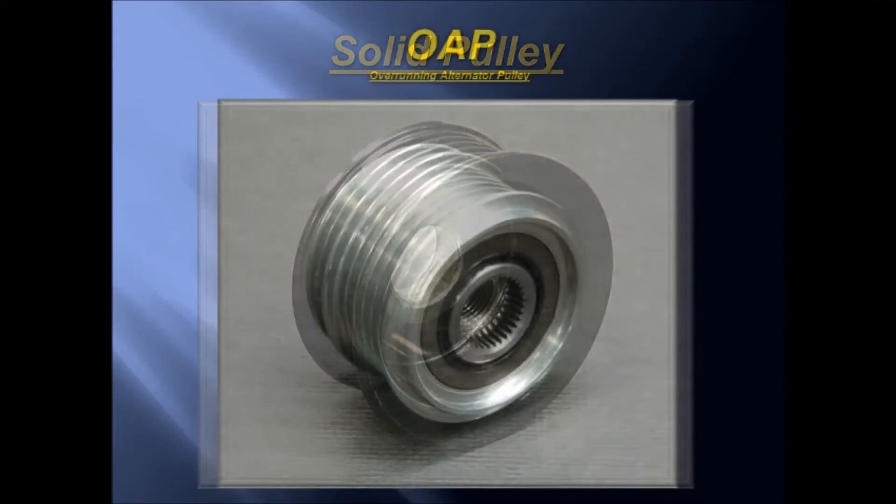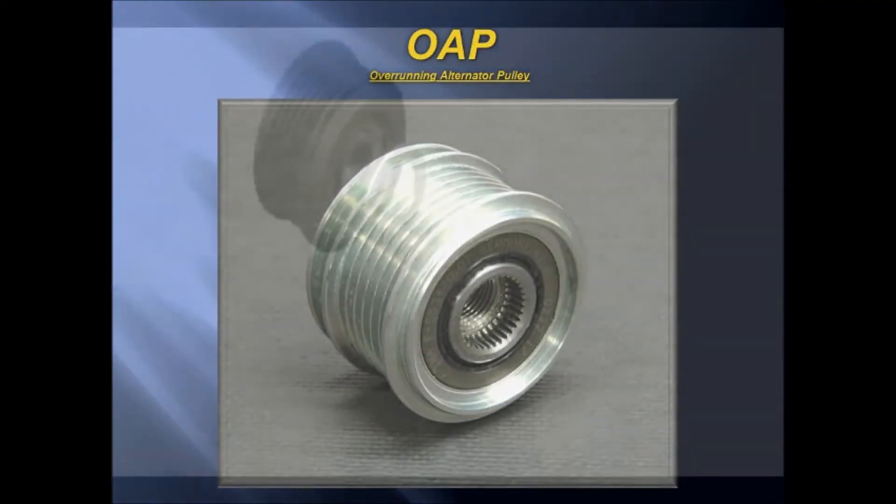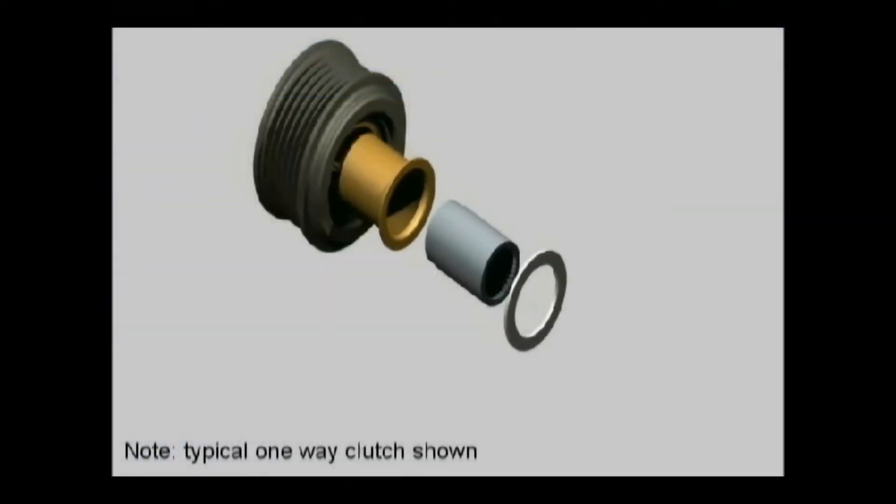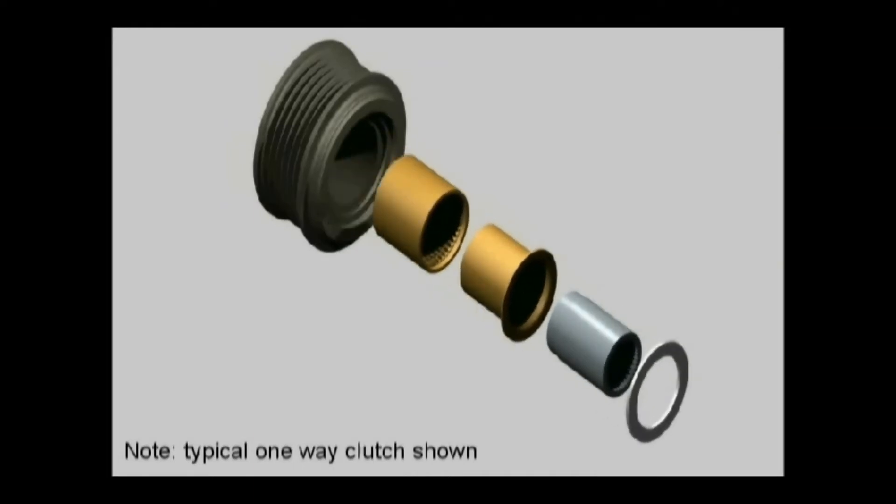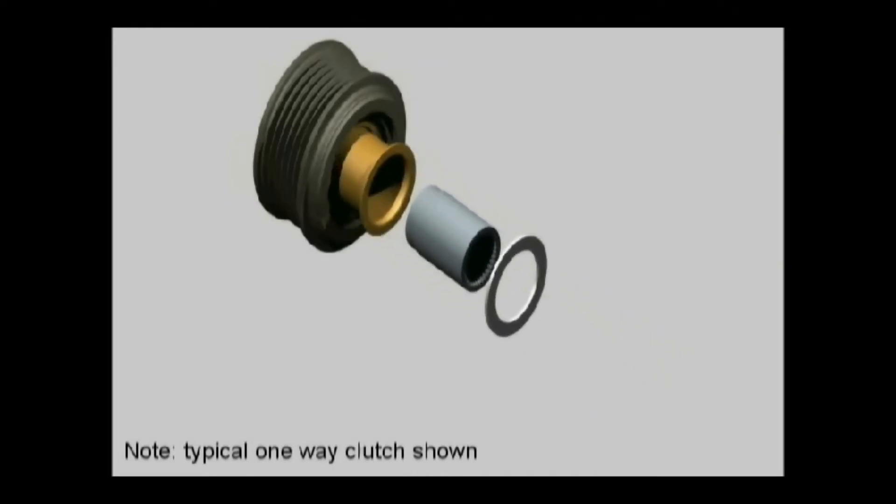Now, the OAP. OAP stands for Overrunning Alternator Pulley. This simply means there is a one-way clutch mechanism that has been incorporated into the alternator pulley.